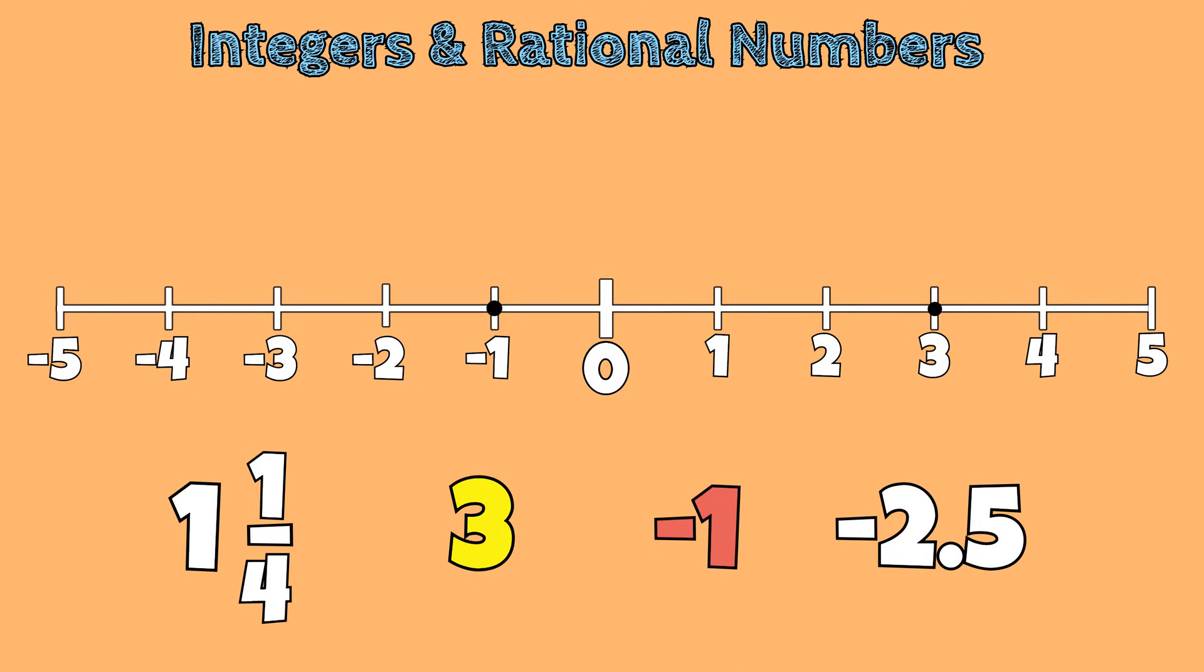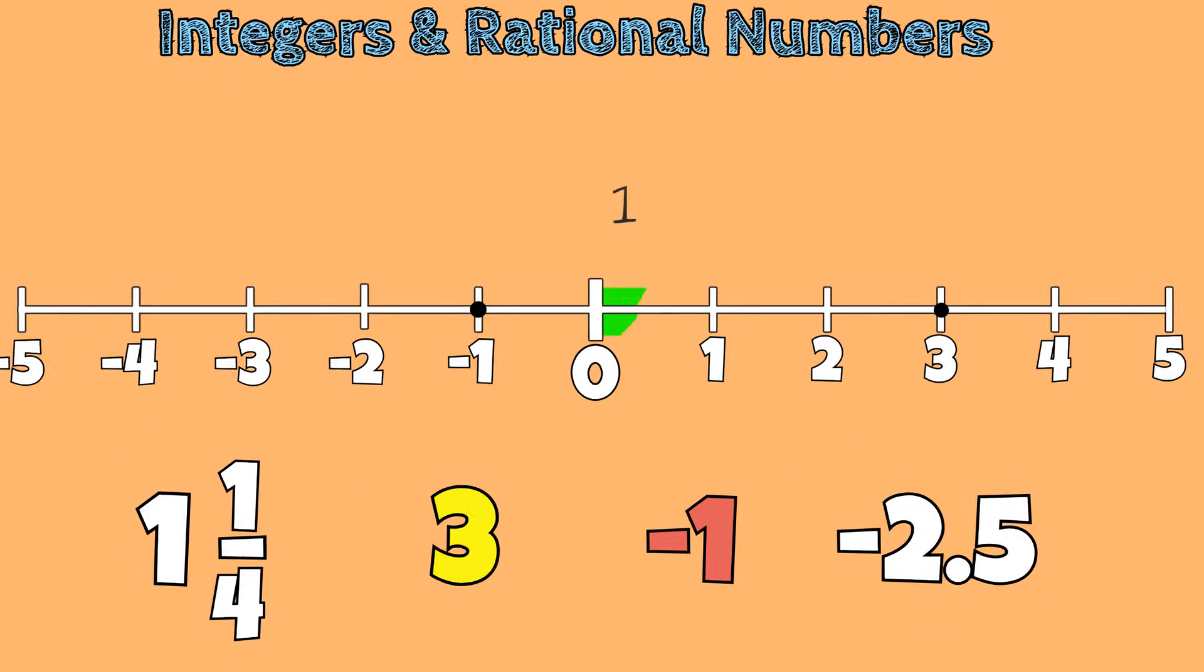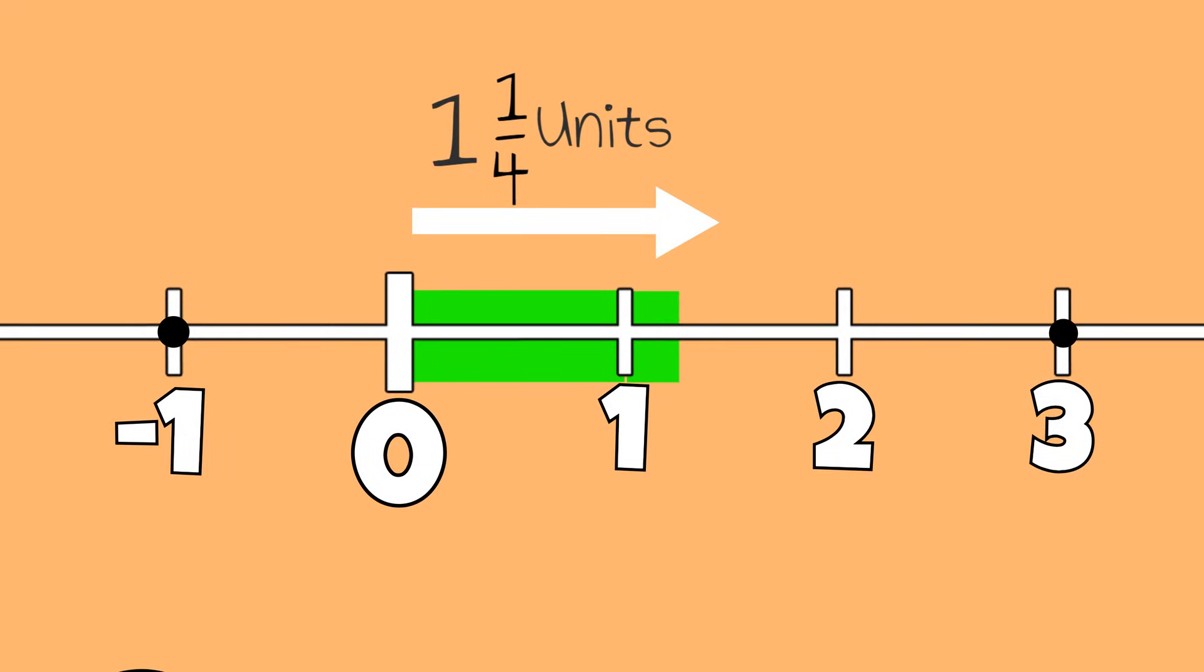That leaves the number 1 and 1 fourth and negative 2 and 5 tenths. 1 and 1 fourth tells us we need to move one unit and a fractional part that represents 1 fourth to the right of 1. Our number should be somewhere in between 1 and 2.